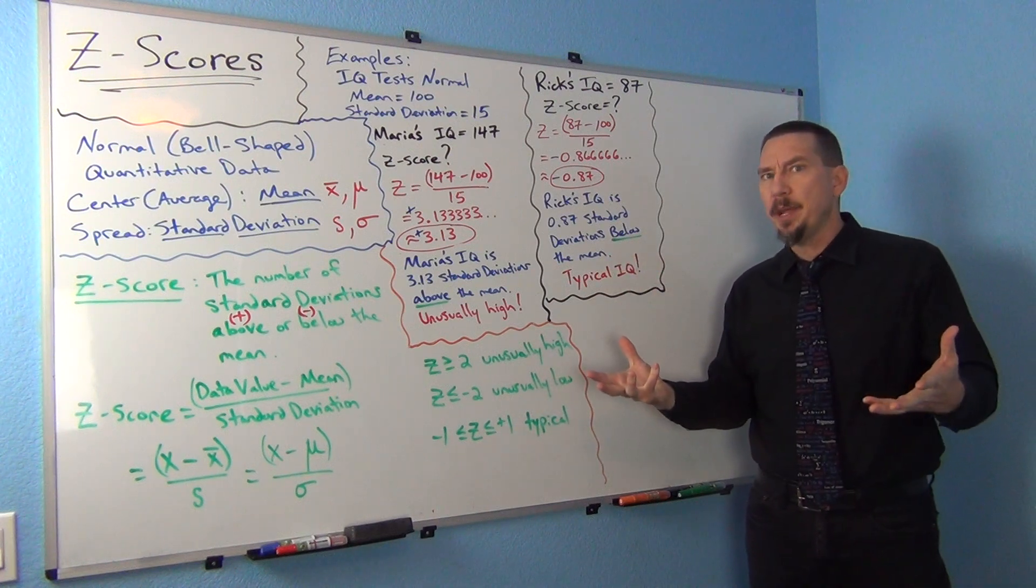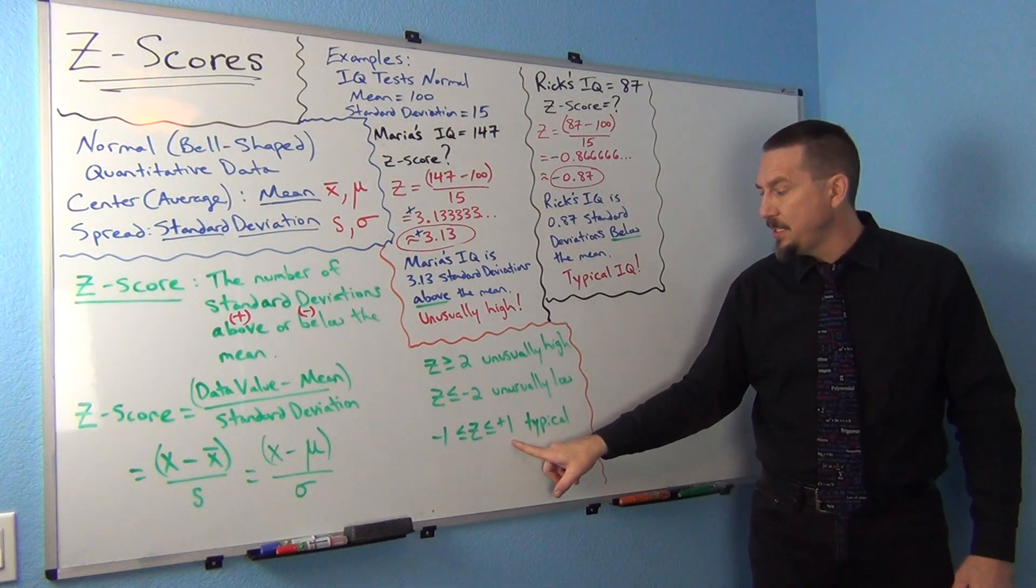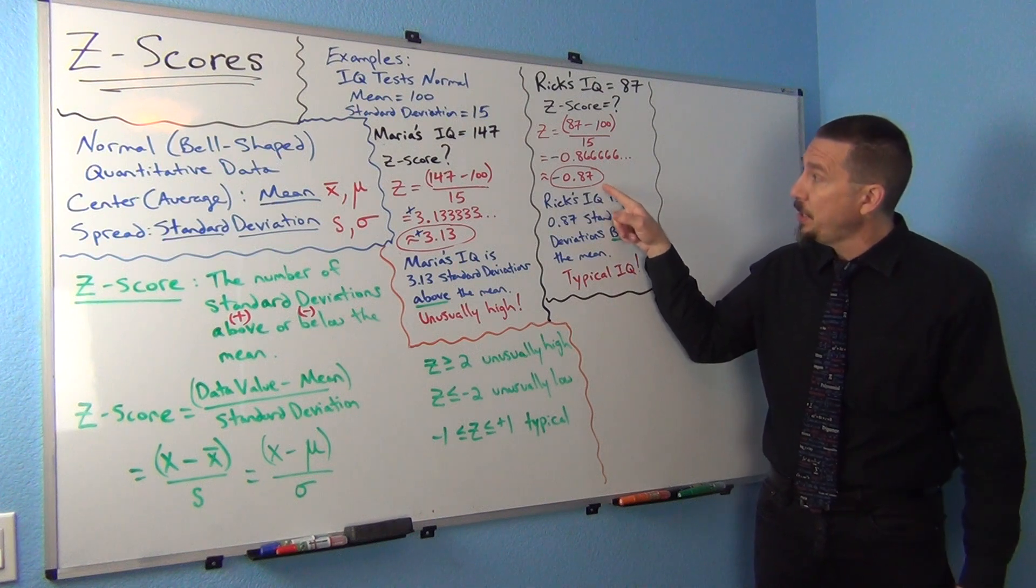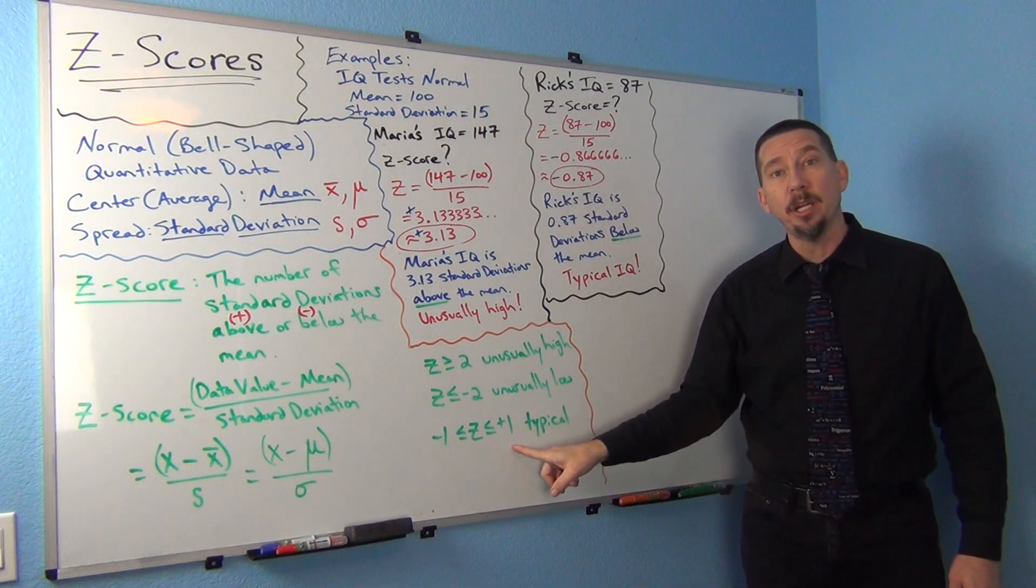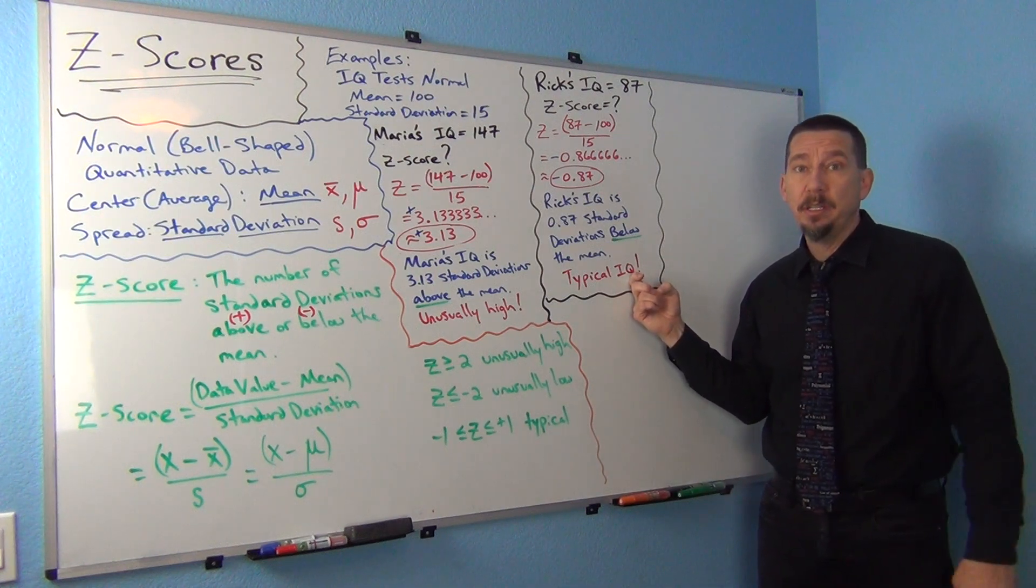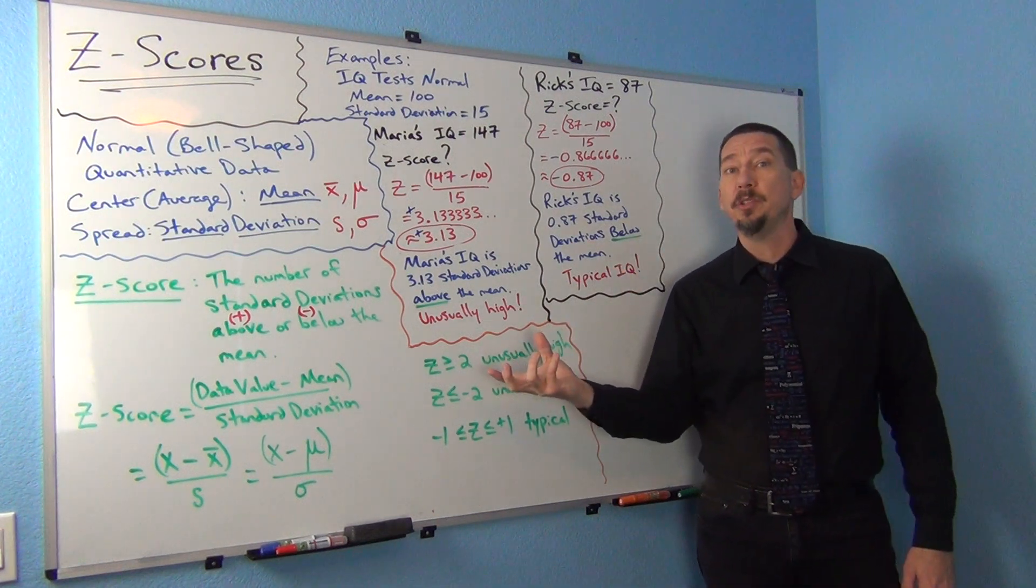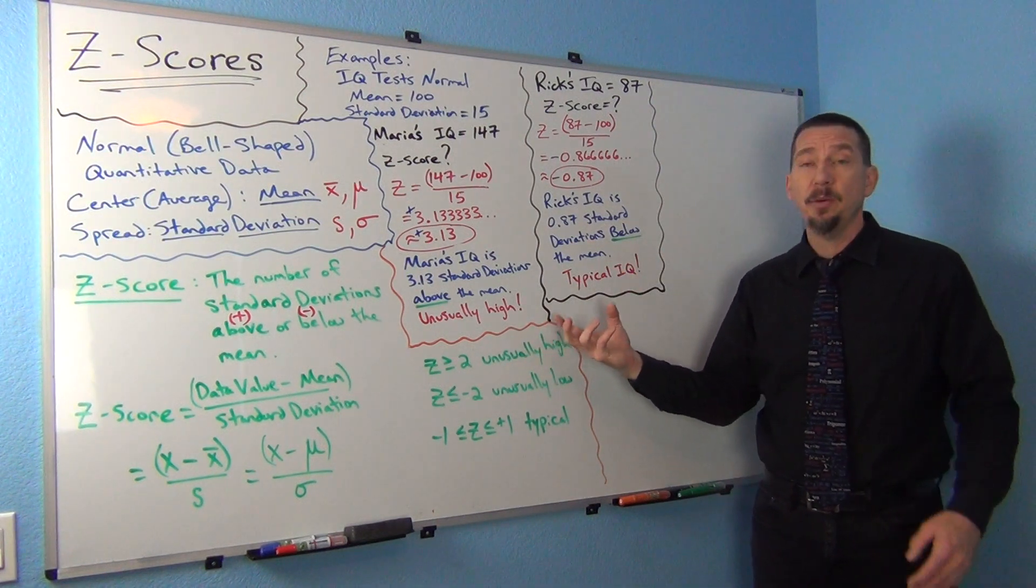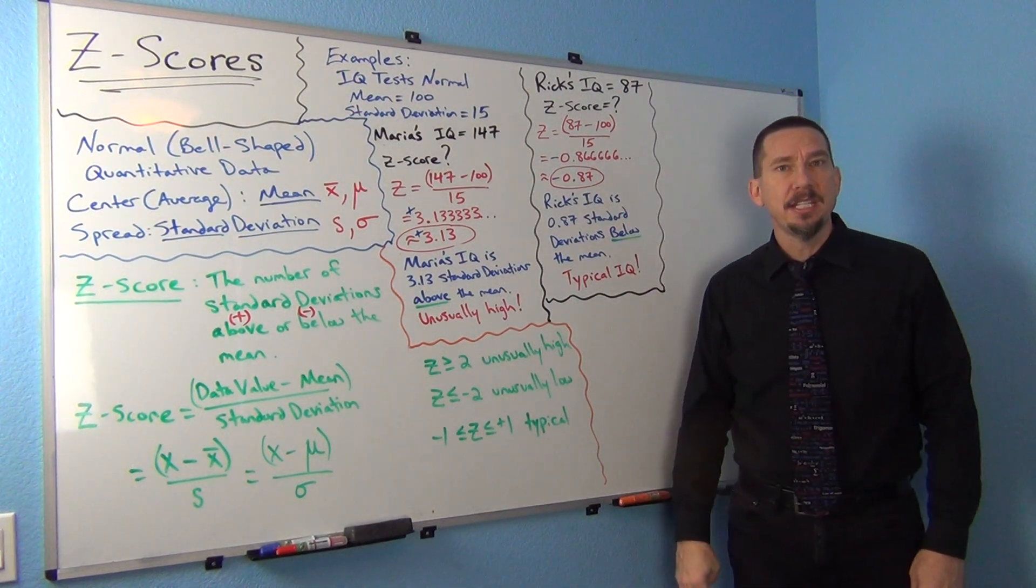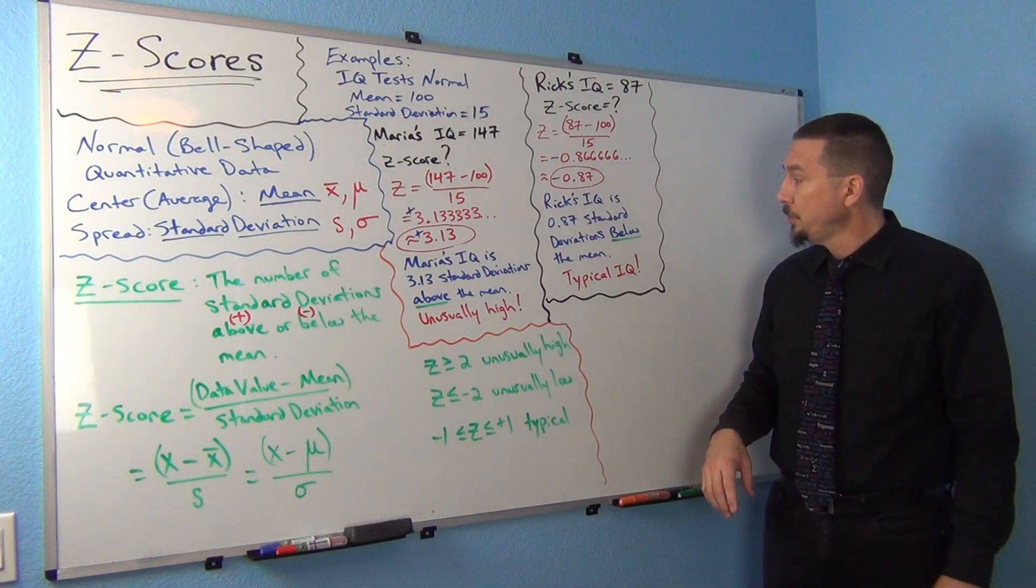Now, where does Rick fall compared to other people? Well, didn't we say any Z-score between negative 1 and positive 1 would be considered typical? And this IQ, negative 0.87, is between negative 1 and positive 1 on the number line. So Rick is actually very typical. He has a typical IQ, like a lot of people. I think we mentioned in the normal data section that that's about the middle 68%. So Rick's kind of in the middle 68% of people's IQ.